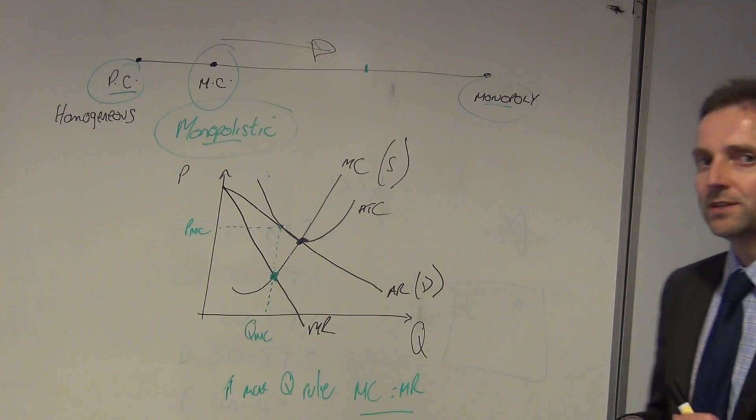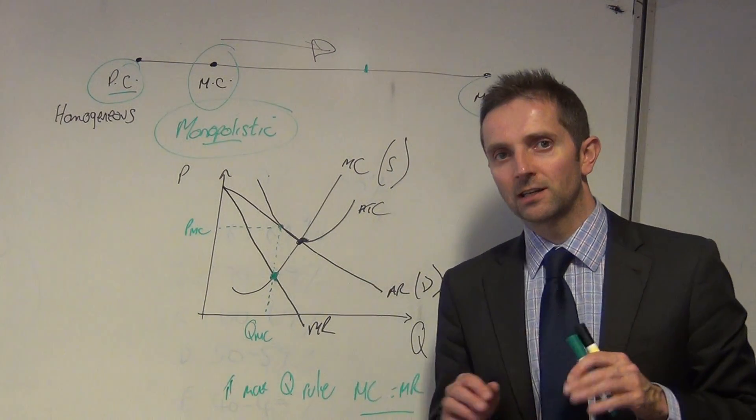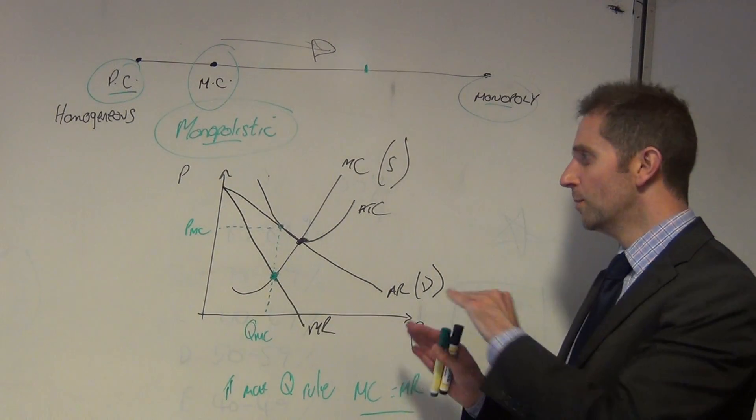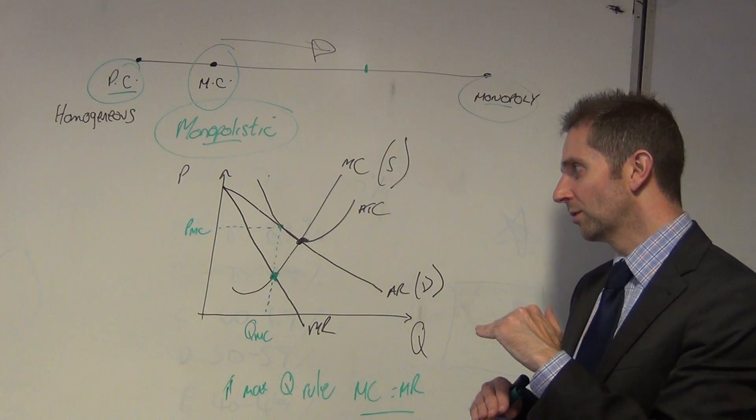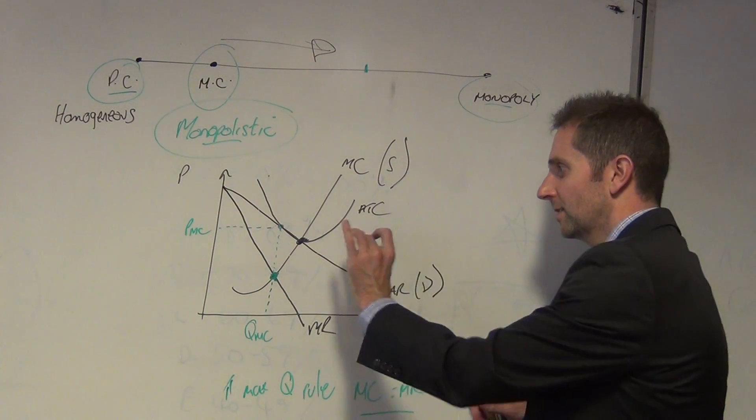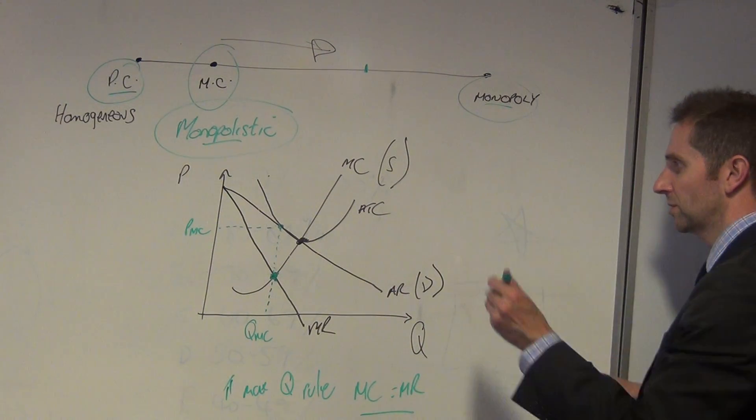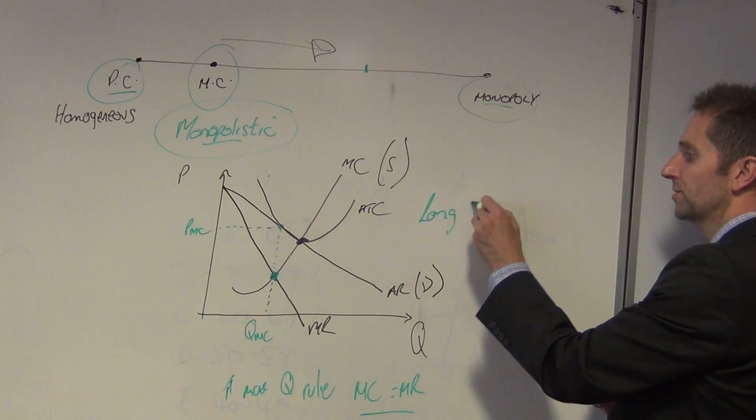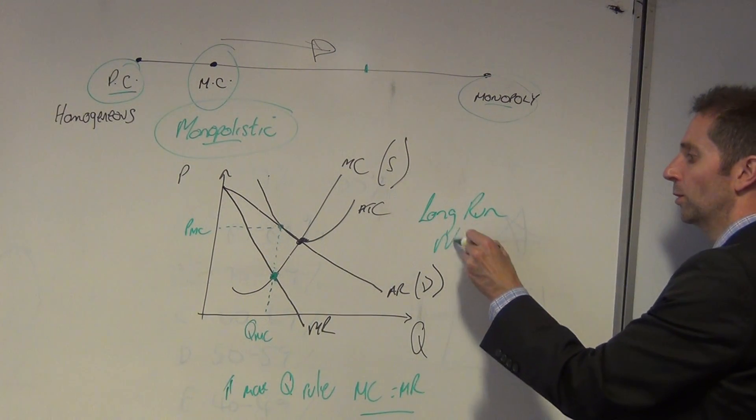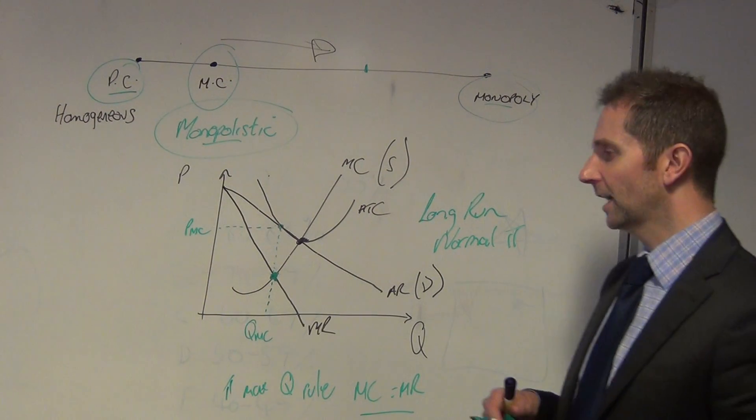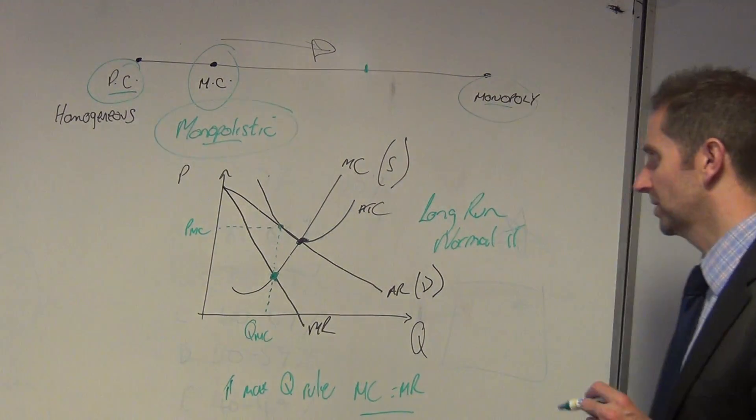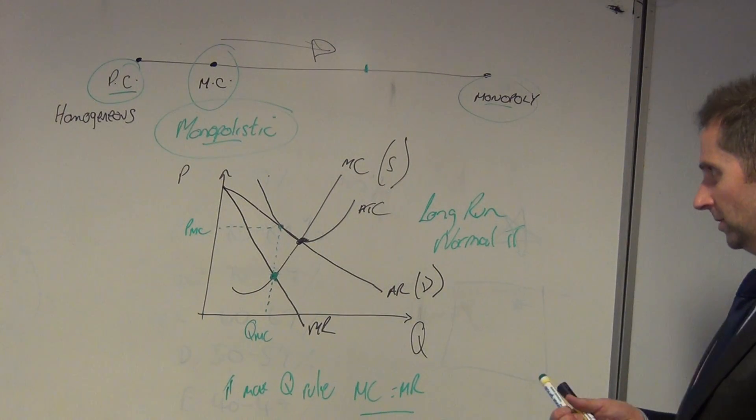So what happens is, if this monopolistically competitive firm is making abnormal profits, more firms jump in. And as a consequence of that, the profits are eroded until we get to this long run equilibrium position. And in the long run we're simply making normal profits. Now let's consider once again the efficiencies in this particular market.